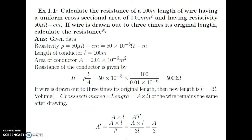In the second part, we have to calculate the resistance when the wire is drawn to three times its original length. The given data: resistivity ρ is equal to 50 micro ohm centimeter, which equals 50 into 10 raised to minus 8. To convert micro it is 10 raised to minus 6, and to convert centimeter into meter it is 10 raised to minus 2, so together 10 raised to minus 8.